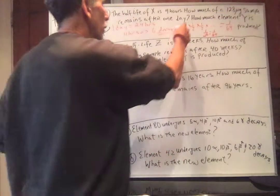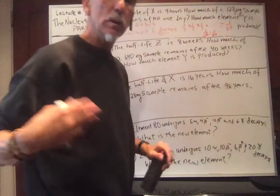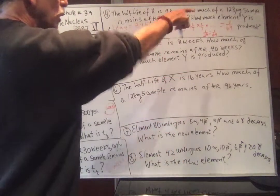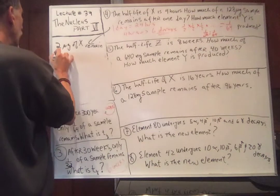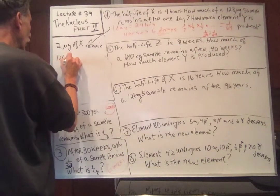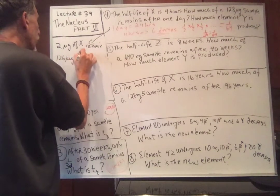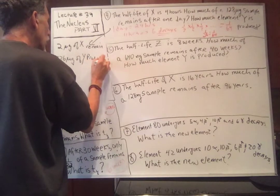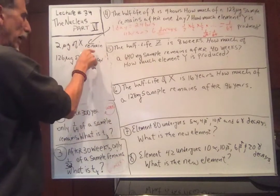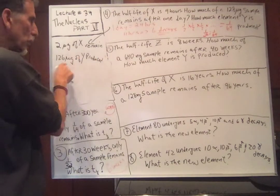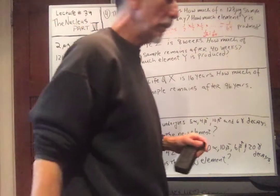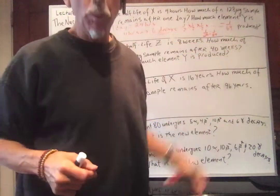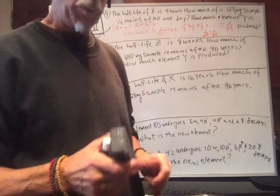The other question is how much of element Y is produced. If it changes into element Y, whatever is left over is Y. We started with 128 micrograms and 2 micrograms of X remain, so that means 126 micrograms of Y are produced.